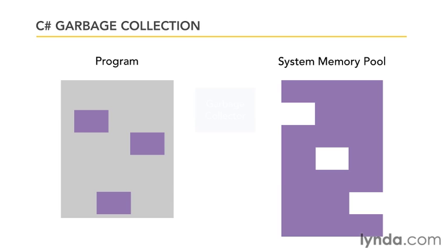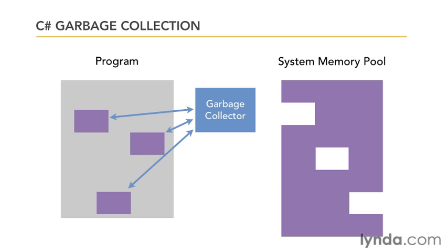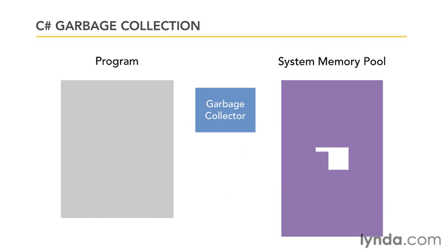At some point, there's a special class in the .NET framework called the garbage collector. Garbage collection is the process by which .NET figures out that memory is no longer being used by your program and can take it back into the system. The garbage collector keeps track of the objects that you've allocated, and when it figures out that these objects are no longer being used, it simply puts them back in the system memory pool. This process is completely invisible to your program — you don't have to worry about doing this at all. It all just happens for you.